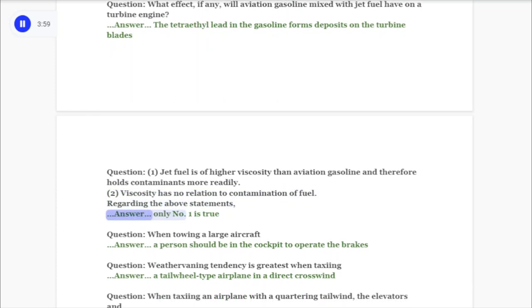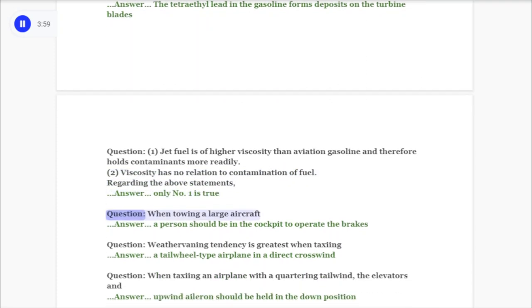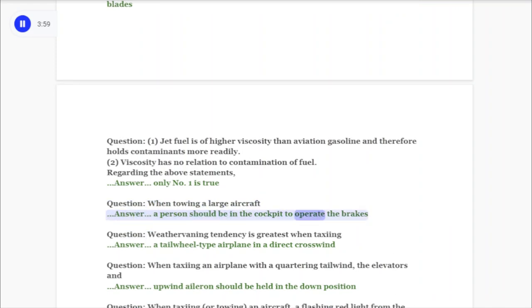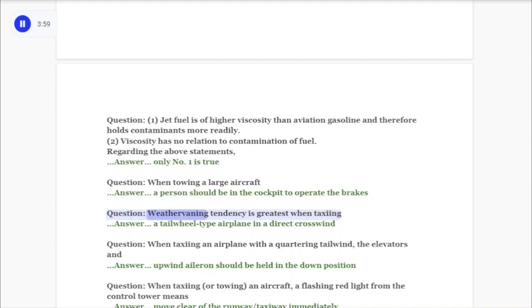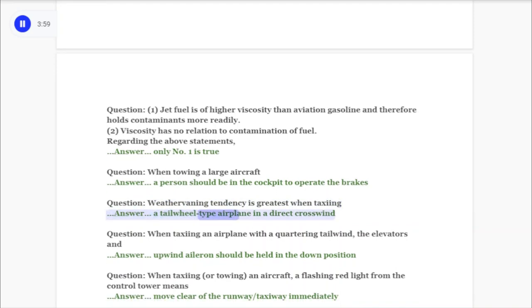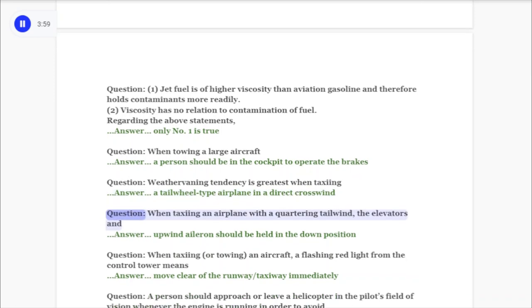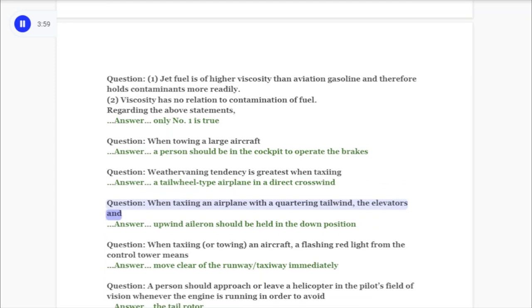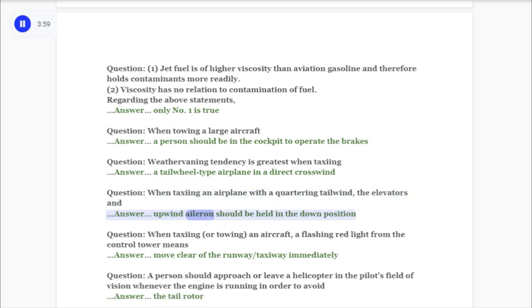Question: When towing a large aircraft? Answer: A person should be in the cockpit to operate the brakes. Question: Weather vaning tendency is greatest when taxiing? Answer: A tailwheel-type airplane in a direct crosswind. Question: When taxiing an airplane with a quartering tailwind, the elevators and? Answer: Upwind aileron should be held in the down position.